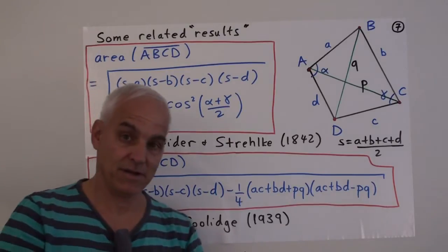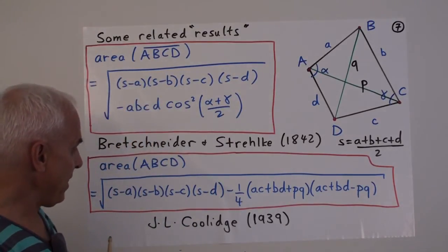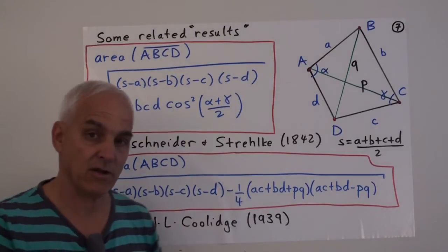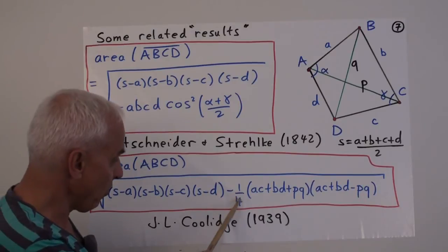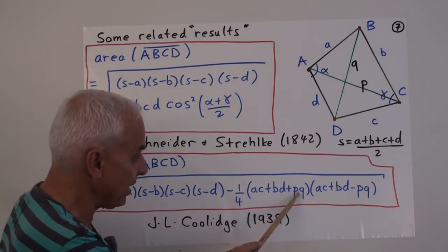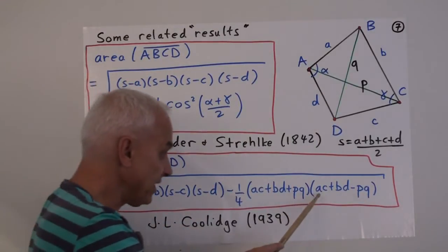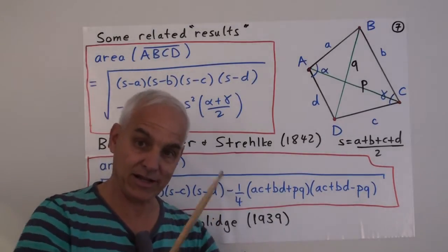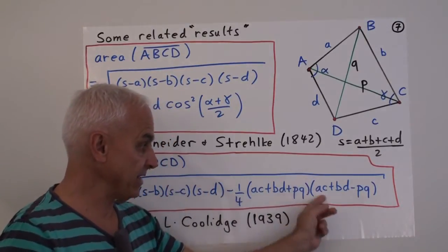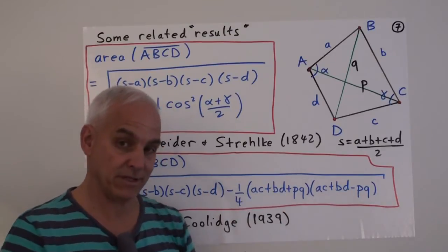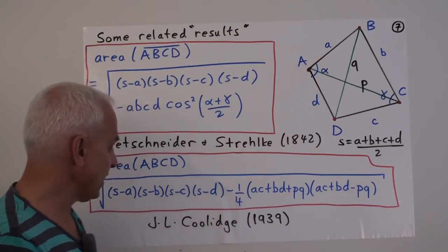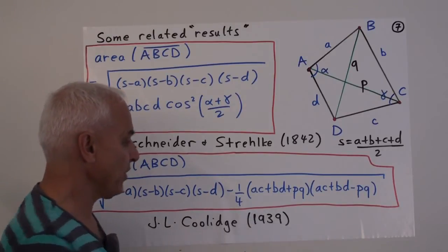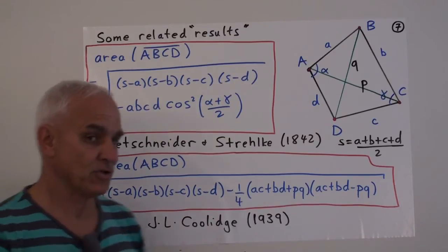And, then, there's a similar kind of formula where this term here with the transcendental circular function and the angle reference is replaced with this term here. 1 quarter AC plus BD plus PQ, where P and Q are the diagonal lengths, times AC plus BD minus PQ. And, we see another connection with the cyclic situation because, in the cyclic situation, Ptolemy's theorem says that AC plus BD equals PQ. And, so that term is going to be zero. This formula is, as far as I know, due to the geometer and historian of geometry, J.L. Coolidge in 1939.